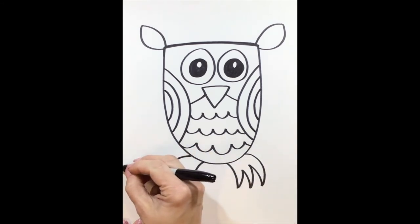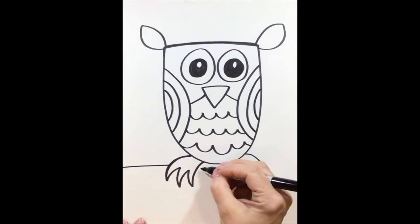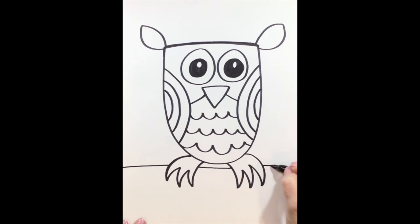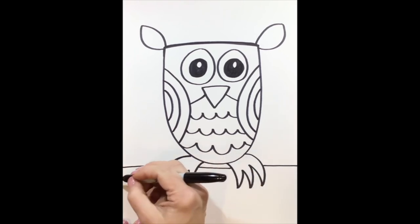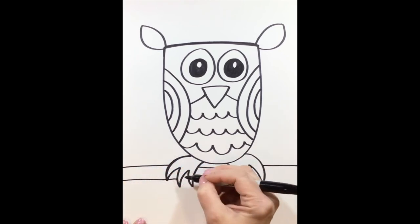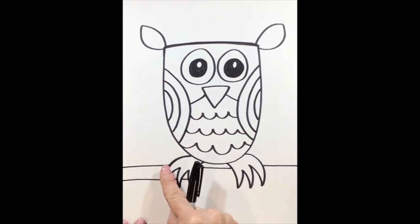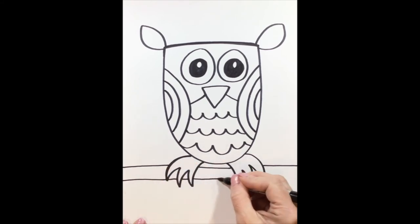The last thing I want you to do is add a branch going straight across your paper. Remember to stop when you get to the drawing, and then pretend or imagine the line is going through your owl, but we don't want it to actually go through the owl. We want it to look as if our owl is sitting on a branch.